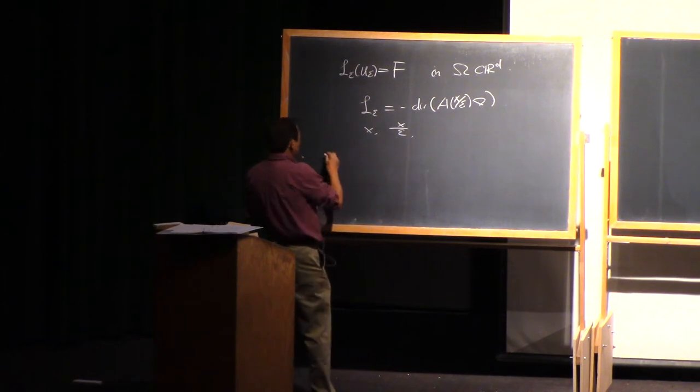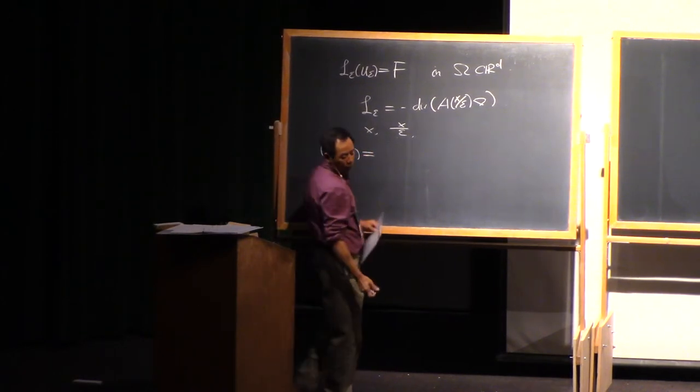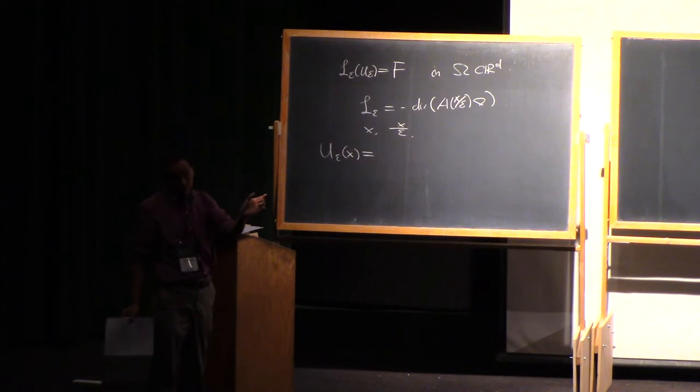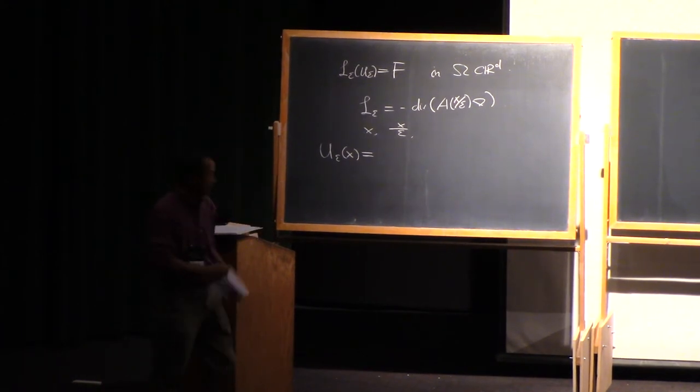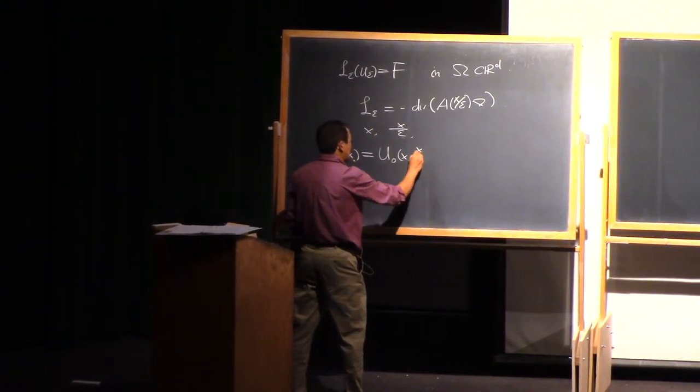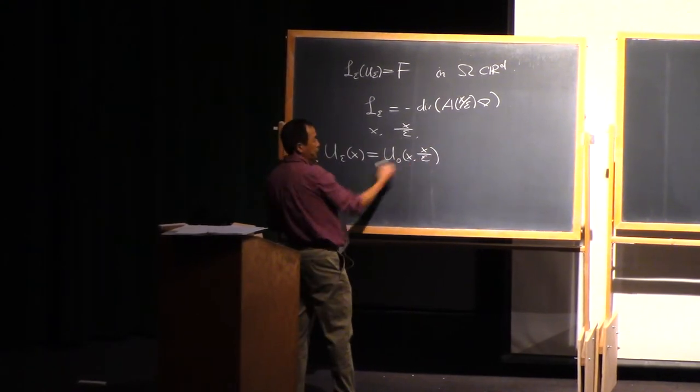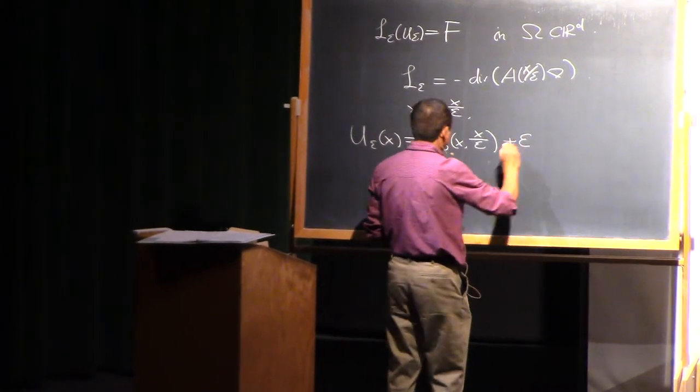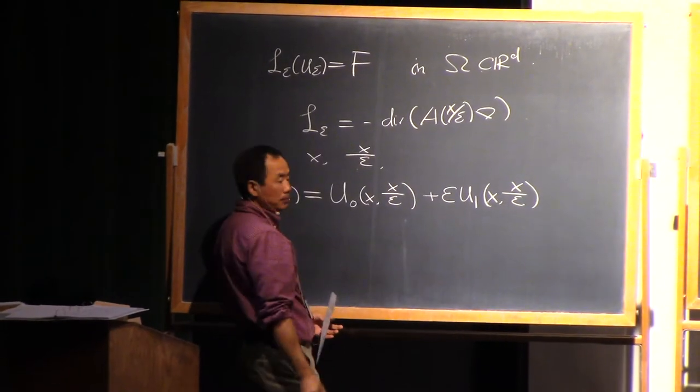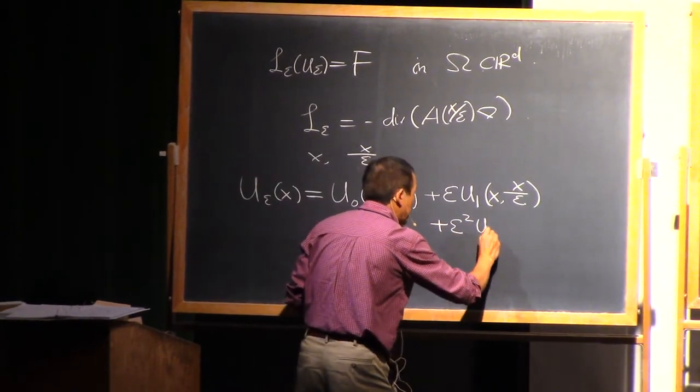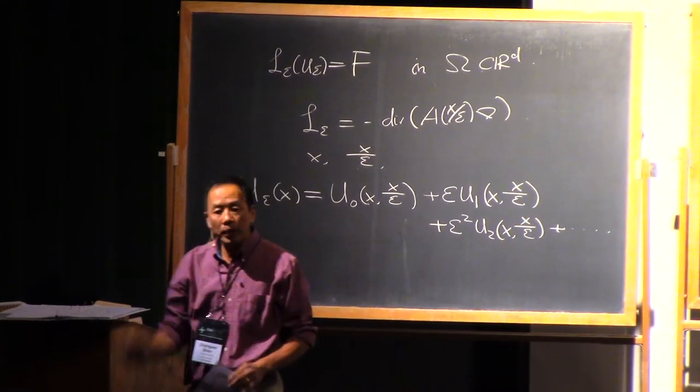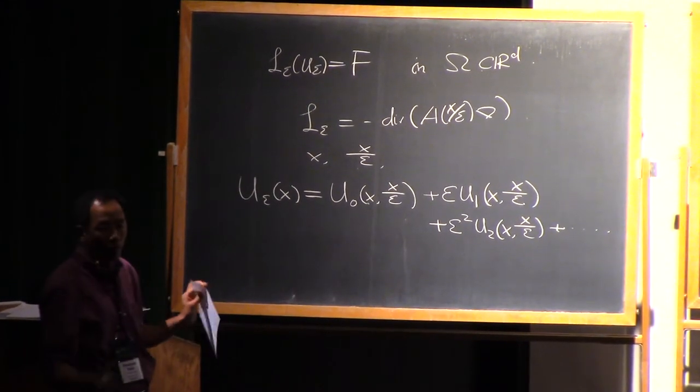There's a method called a formal asymptotic expansion, two scale expansion. You try to figure out the formula by expanding the solution in a formal manner. You write U_y as U_0(x, x/y) plus yU_1(x, x/y) for the second term, then you can have a third term U_2(x, x/y) and continue. This is an infinite series. We're not going to concern with whether it converges; it's a formal expansion here.